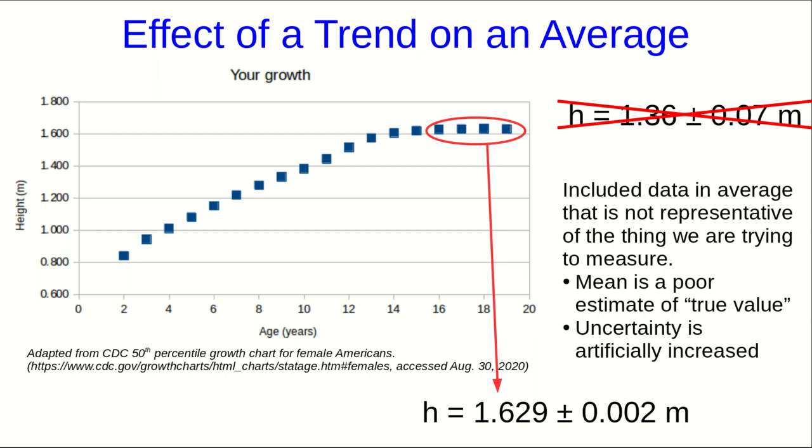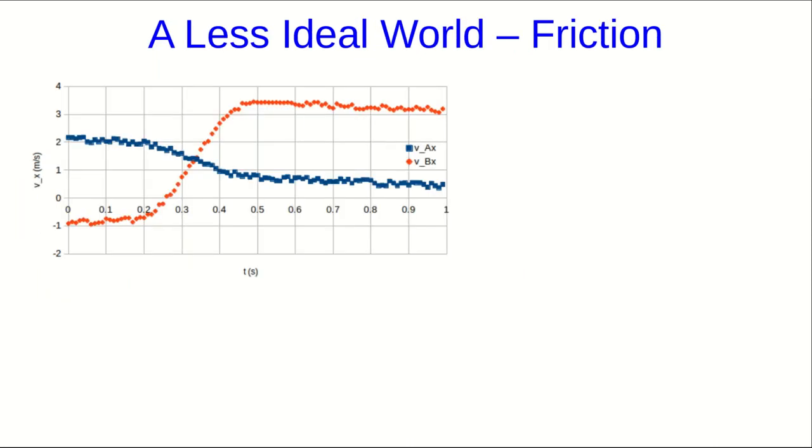However, think of the carts. There is no time when we expect the friction to not be acting. And so we don't have a nice convenient time in the cart data where the velocities are expected to actually be constant. So hopefully you're now seeing the problem. What we're really interested in is the momentum just before the collision and the momentum just after the collision. And in an ideal world, we would expect them to be equal.